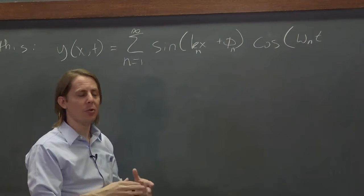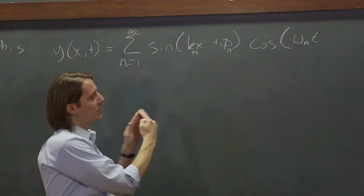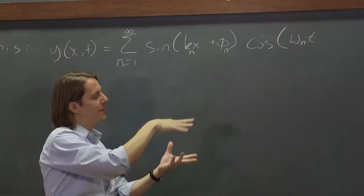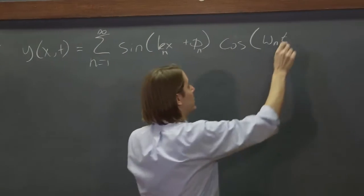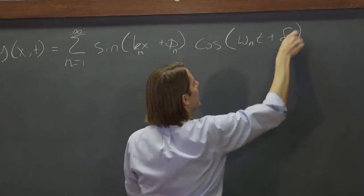So maybe if the pulse is going this way, all the normal modes would be out of phase in one manner, and if the pulse is going this way, they'd be out of phase in another manner. So maybe the solution is to add a phase lag there as well.